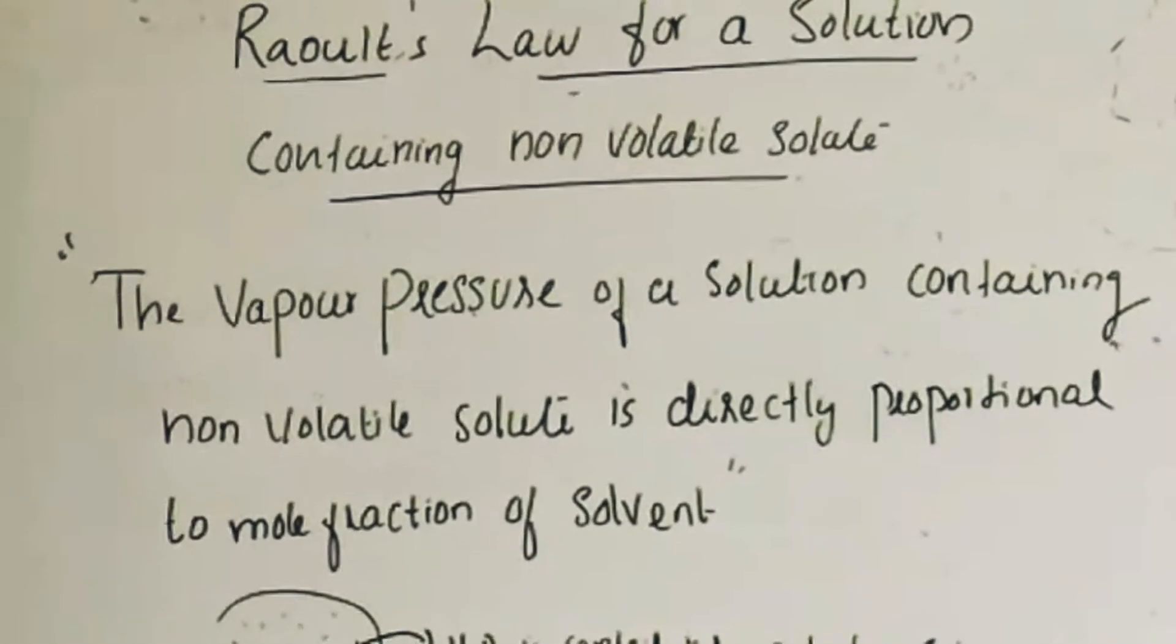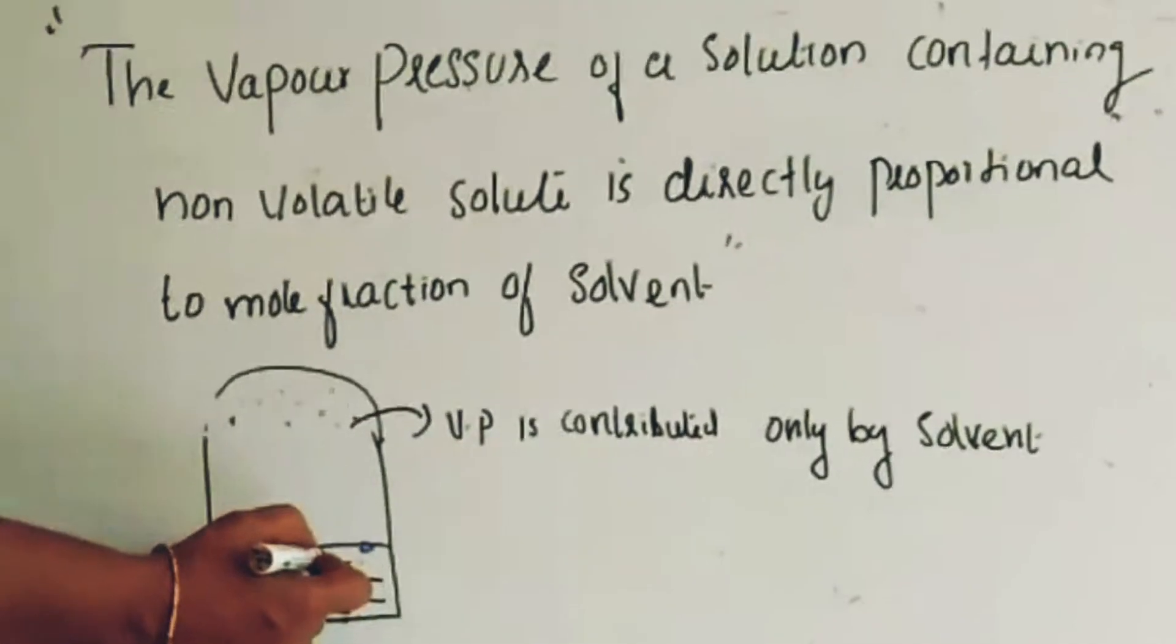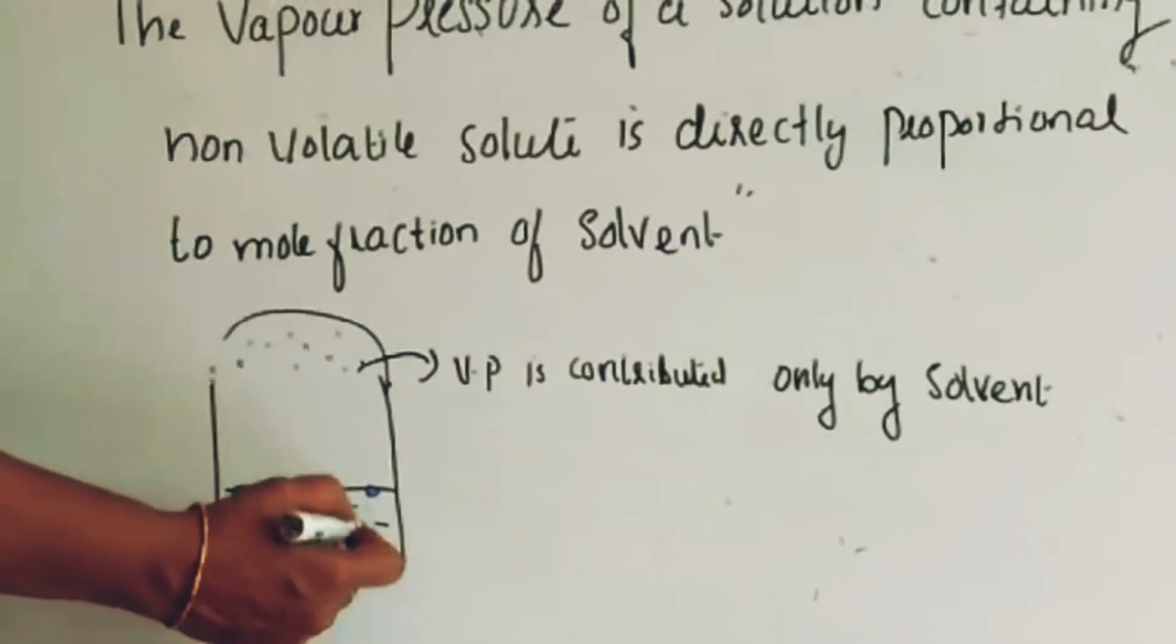This is the next case. In this particular solution, you can see both non-volatile solute. It is given in blue color and this is the volatile component.